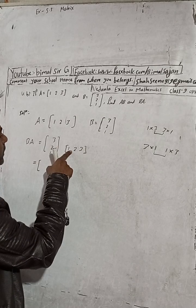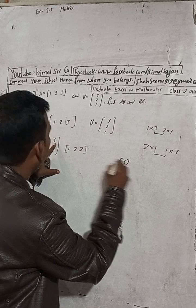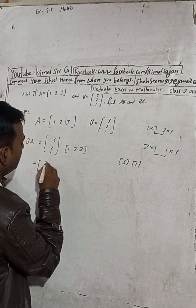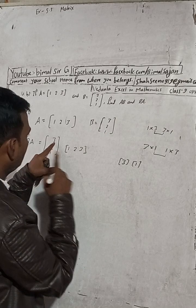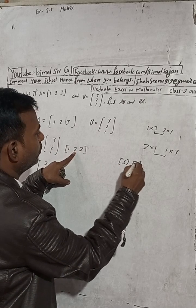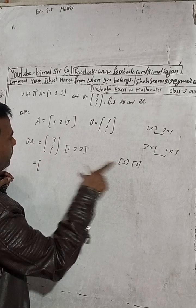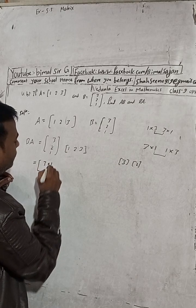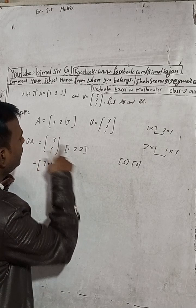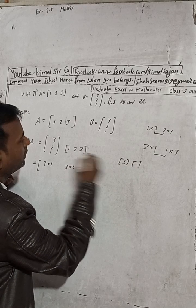Take the first row of B and first column of A: 3×1. Now the second column: 3×2. And the third: 3×3. So the first row gives us 3×1, 3×2, 3×3.